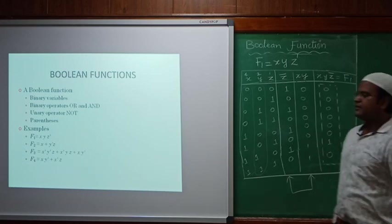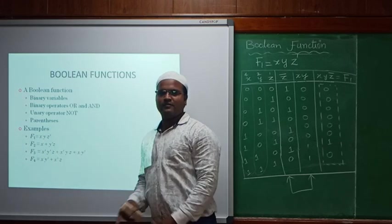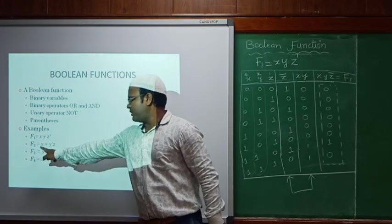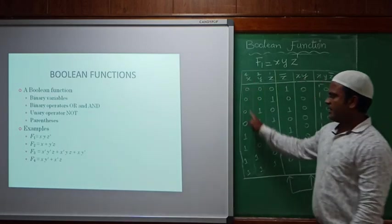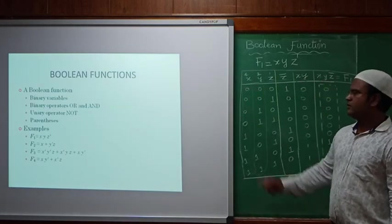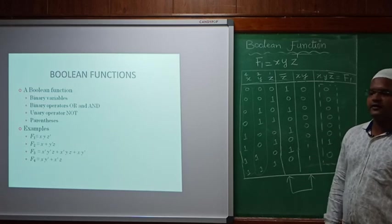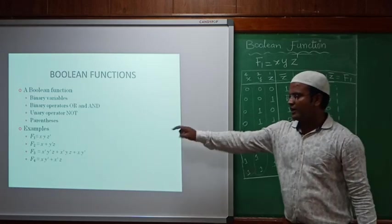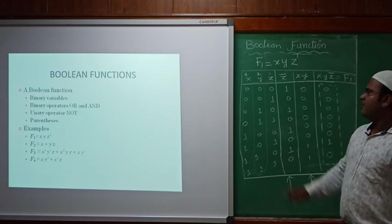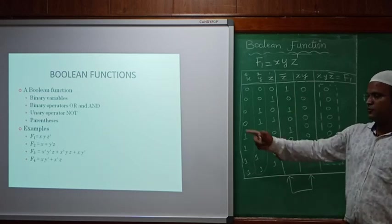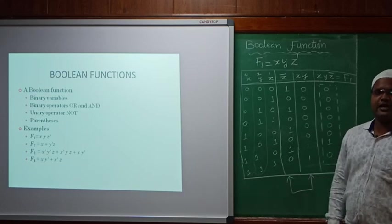Similarly for f2, we will take f2(x, y, z) = x·ȳ·z — again three variables. We write columns for x, y, z, then ȳ (complement of y), then x·ȳ·z. We will continue solving f2, f3, and f4 in the next class.